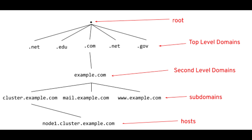DNS servers accomplish two things: first, it stores a list of domain names and their associated IP addresses, and second, it responds to requests from recursive DNS servers about the correct IP address assigned to a domain name. After getting the answer, the recursive DNS server sends the information back to the computer that requested it. Each part of a domain like example.com has a specific authoritative DNS name server.